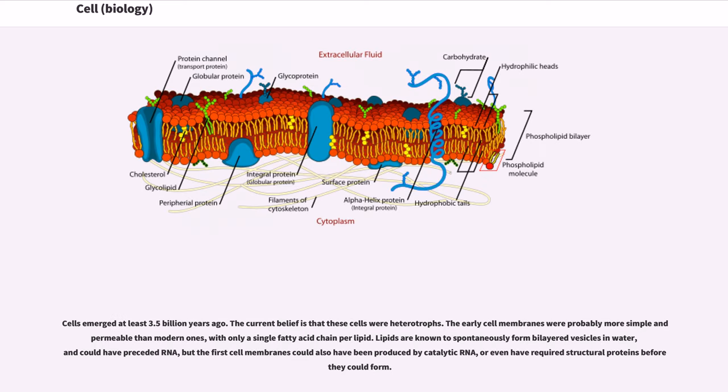Cells emerged at least 3.5 billion years ago. The current belief is that these cells were heterotrophs. The early cell membranes were probably more simple and permeable than modern ones, with only a single fatty acid chain per lipid. Lipids are known to spontaneously form bilayered vesicles in water and could have preceded RNA, but the first cell membranes could also have been produced by catalytic RNA, or even have required structural proteins before they could form.